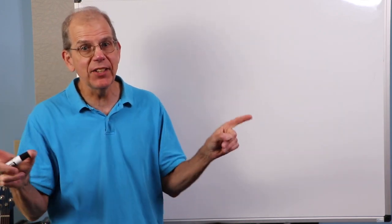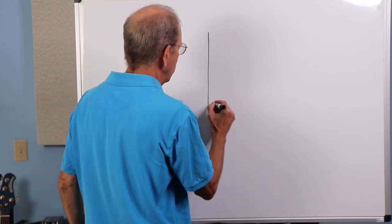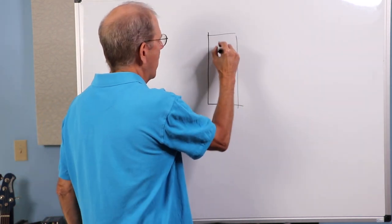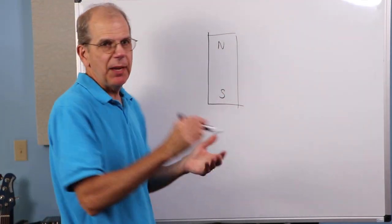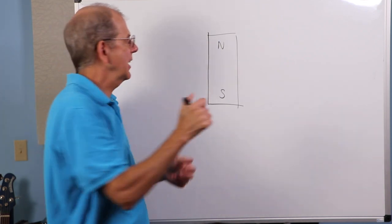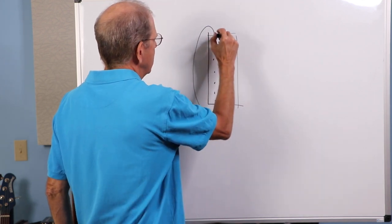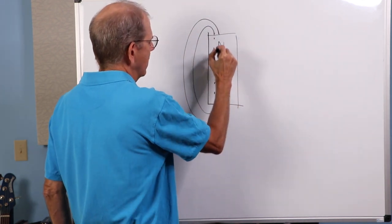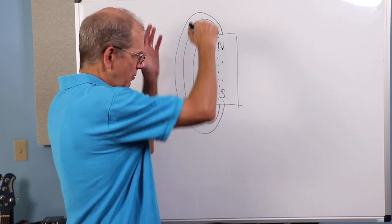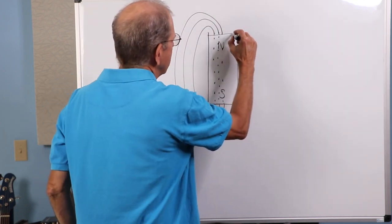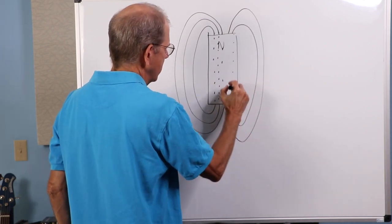So, we start with the idea of a magnetic field. Something you might have seen before. Maybe a little school experiment. And they would say, okay, we're going to take a bar magnet, north-south. And what we do is maybe we'll sprinkle some iron filings on top of this thing. And what we'll see is a pattern. We'll see these patterns of these magnetic lines.